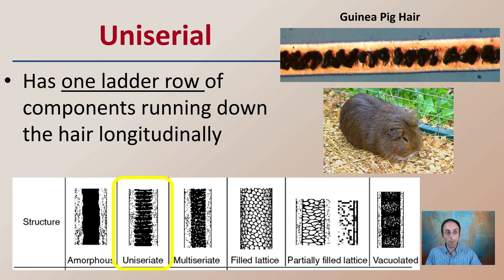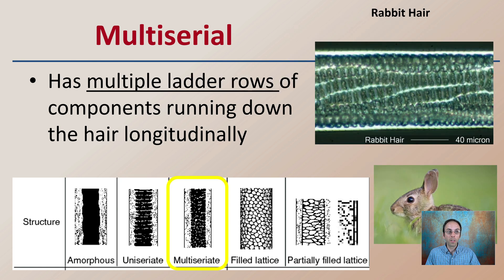The uni-serial medulla has one lateral row of components running down the hair longitudinally. An example of that would be guinea pig hair, where we can clearly see that uni-serial pattern in the medulla.